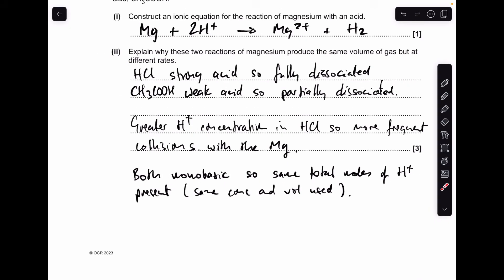And then the last thing we need to talk about is the fact that they're both monobasic, so ultimately you've got the same total moles of H plus ions present. That's because you've used the same concentration and volume for each acid. It's just taken longer for the H plus ions to all be produced in the ethanoic acid because of that partial dissociation.